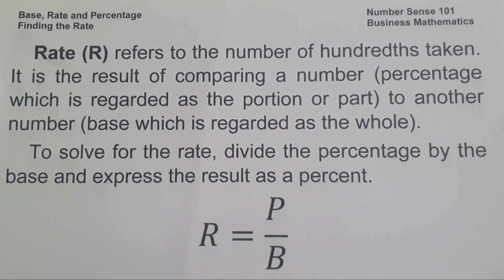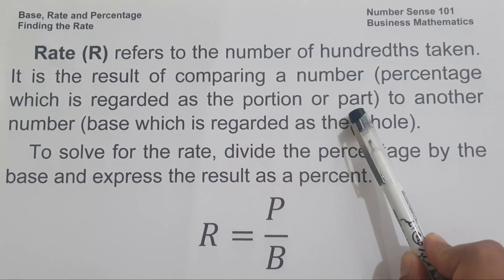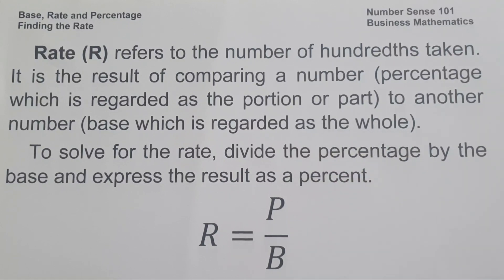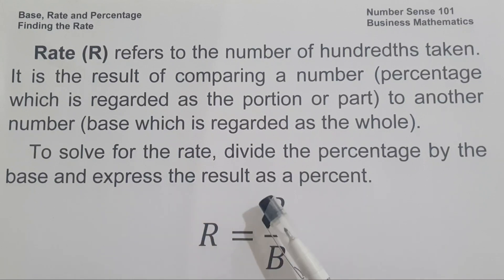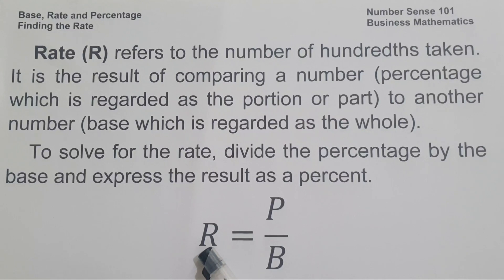When we say rate, it refers to the number of hundreds taken. It is the result of comparing a number — that is the percentage, which is regarded as the portion or part — to another number, which is the base, which is regarded as the whole. Rate can be written in percentage, decimal, or fraction. And to solve for the rate, you simply divide the percentage by the base and express the result as a percent. The formula is: rate equals percentage over base.